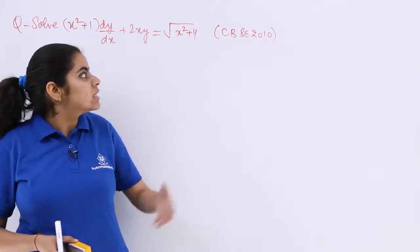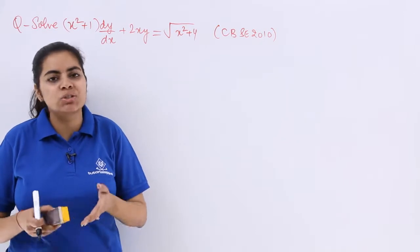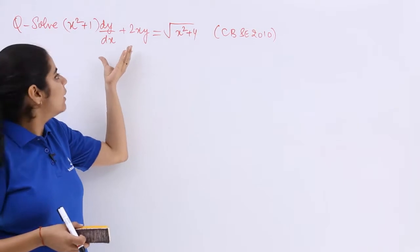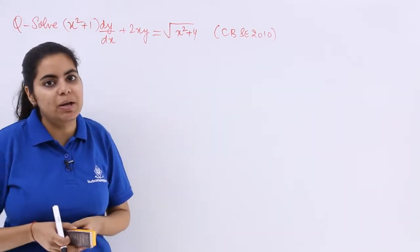The question I am taking up is a previous year examination question asked in the CBSC examination 2010. It says solve (x²+1) dy/dx + 2xy = √(x²+4).